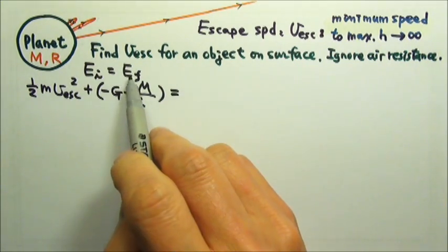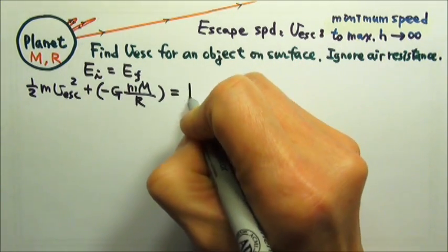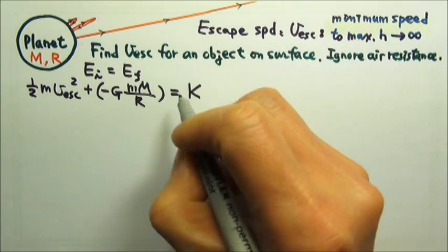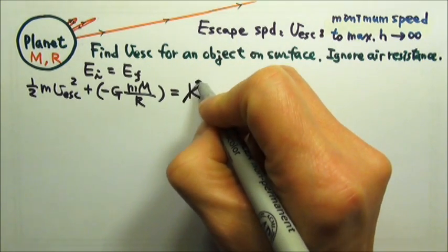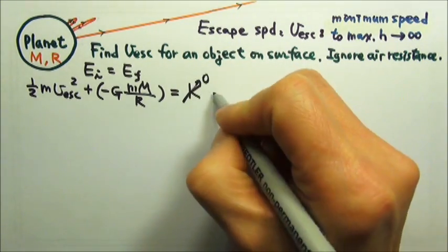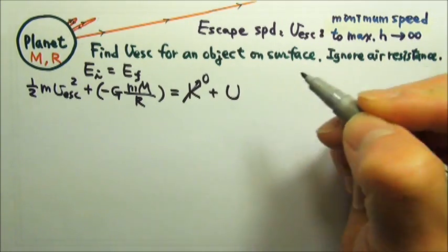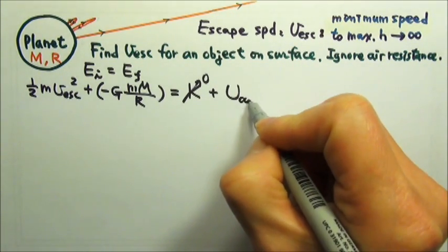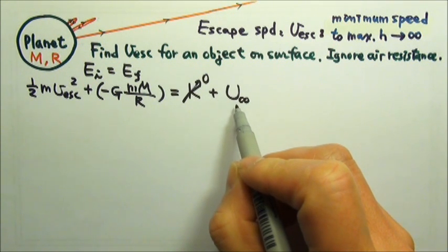And then, at the maximum height, the speed will be zero, so the kinetic energy is zero. At the maximum height, because it's at infinity, what is the potential energy at infinity?